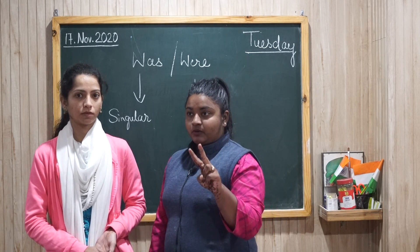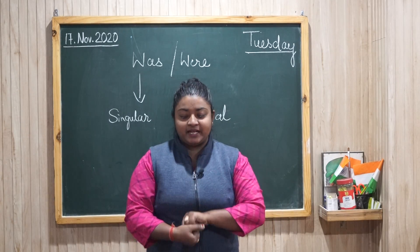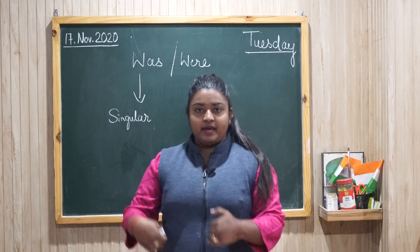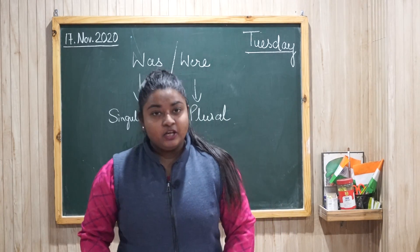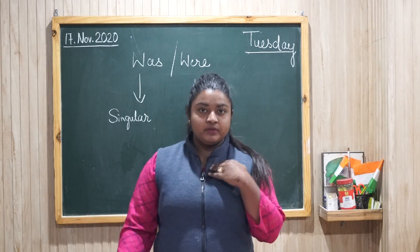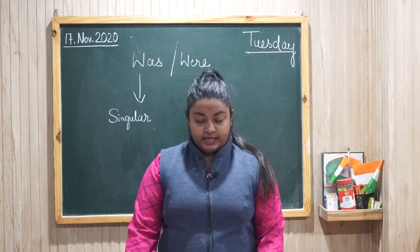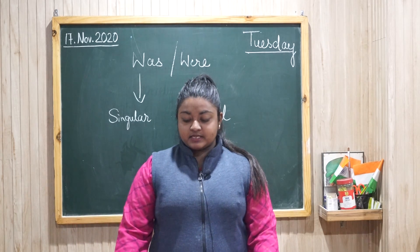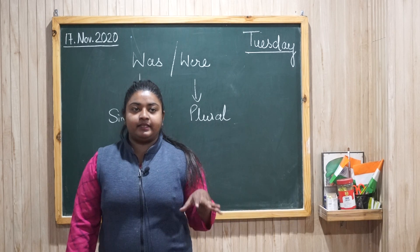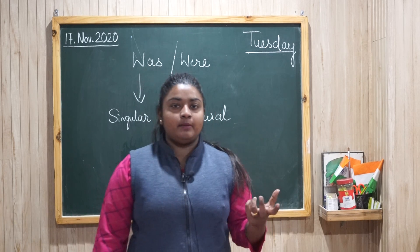तो 1 से ज़्यादा person होंगे — अब मैं किसी और को भी अपने friend को बुलाऊंगी तो और हो जाएंगे। इसमें हमने क्या explanation किया है? जब हम 1 person से ज़्यादा की बात करें — singular की बात थी तो सिर्फ मेरी थी और plural की बात थी तो मैं और माम दोनों थे — we were in a party yesterday। We use were with the following words — was singular के लिए और were plural के लिए।